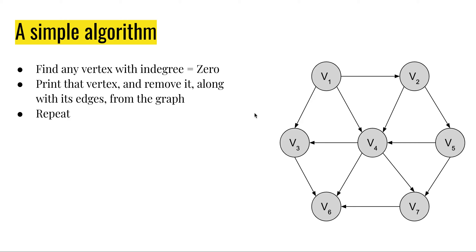Now I will demonstrate a simple algorithm — not the formal algorithm we will use, but a simple one to understand the concept. The algorithm goes like this: first, find any vertex with in-degree equal to 0, then print that vertex and remove it from the entire graph along with its edges, then repeat the process.